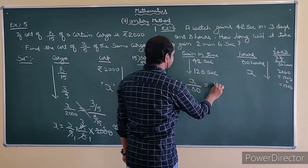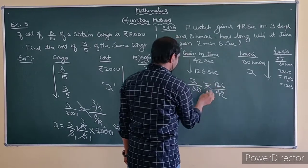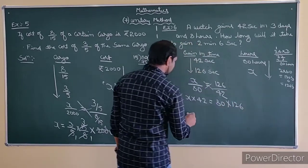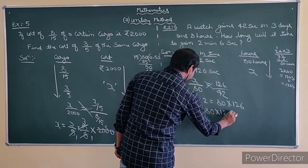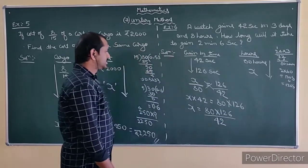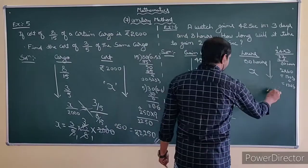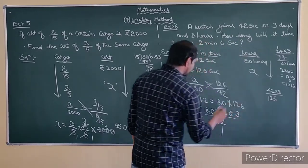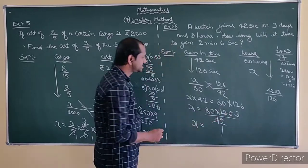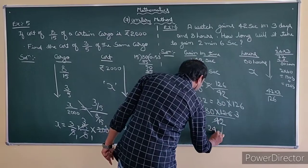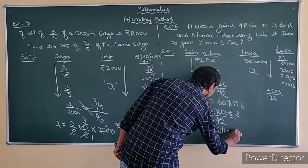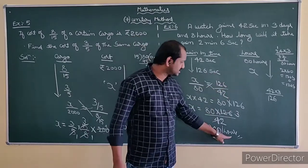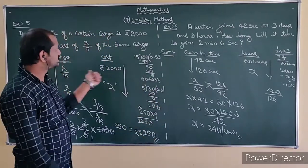So this is the variety of problems we are doing — we have fractions and need to convert. When it is given in hours, convert to minutes and seconds. For the direct variation setup: x by 80 equals 1 plus x by 42, cross-multiply. X equals 80 into 126 divided by 42. Cancelling, x equals 240 hours. So if your watch should increase by 126 seconds, it should take 240 hours.